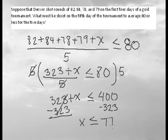So he must shoot 77 or less on the fifth day to average 80.